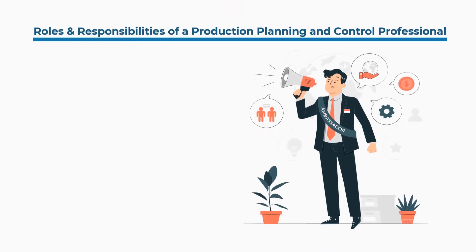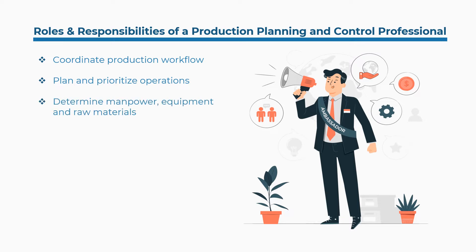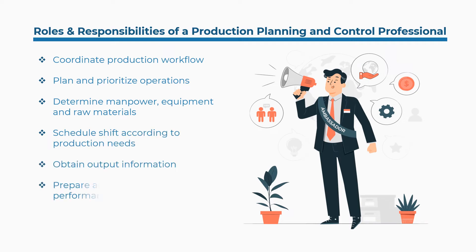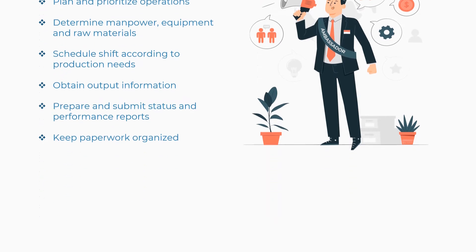Some of the roles and responsibilities of a production planning and control professional are: coordinate production workflow, plan and prioritize operations, determine manpower, equipment and raw materials, schedule shifts according to production needs, obtain output information, prepare and submit status and performance reports, and keep paperwork organized. So let's get started with the best courses and certifications.